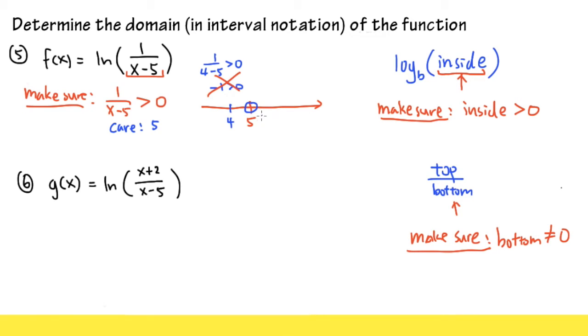Then we check for a number that's bigger than 5. Let's say 6. Then we plug in 6 into here. And we see that we have 1 over 6 minus 5. And this time, do we get something that's bigger than 0? Yes, because 6 minus 5 is 1. 1 over 1 is 1. Is 1 greater than 0? Yes, in that case, you just color this part of the number line, and then you got the domain.